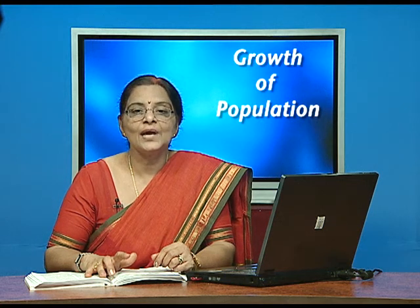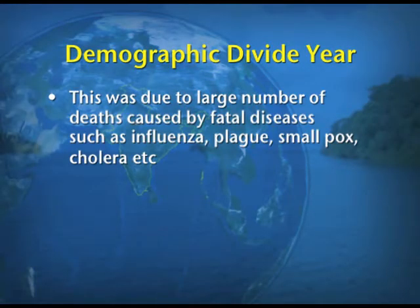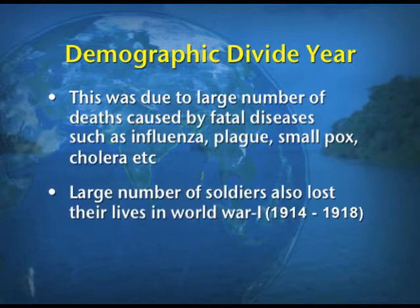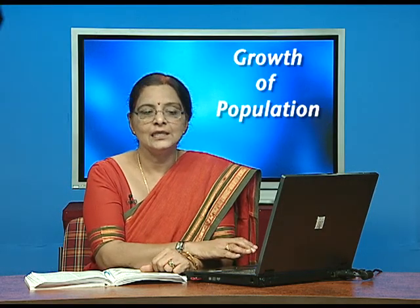The year 1921, known as the demographic divide year, saw negative growth due to two main factors. First, there were large numbers of deaths caused by fatal diseases such as influenza, plague, smallpox, and cholera. Second, a large number of soldiers lost their lives in World War I, which ended in 1918. These were the major causes for the decline in population.